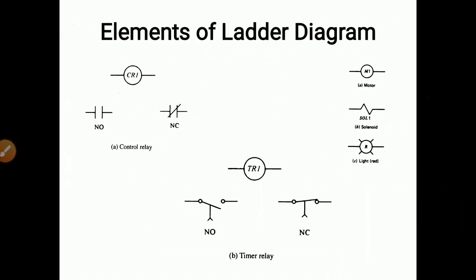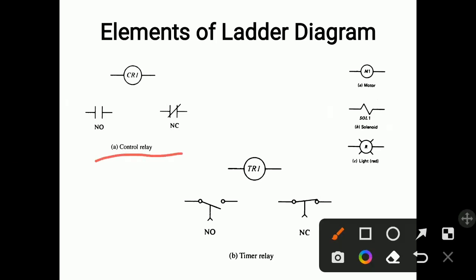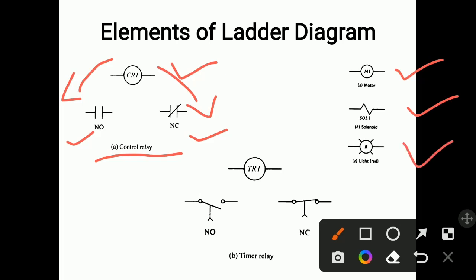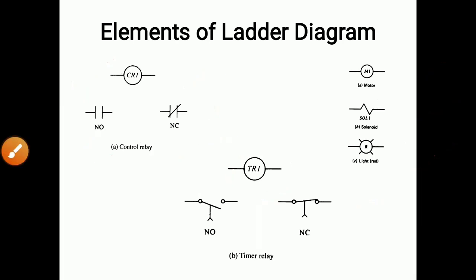Now we will see the elements of a ladder diagram. First is a contact relay — CR1 is related to the relay coil, and this coil is connected to two switches: a normally open switch and a normally closed switch, also called relay contacts. These symbols are used for relay coil and relay contacts. The symbol for a motor, solenoid, and light are also shown. For a timer relay, the timer coil is shown as TR1, and timer contacts are shown as normally open and normally closed. You should remember all these symbols while drawing a ladder diagram.